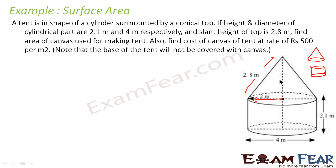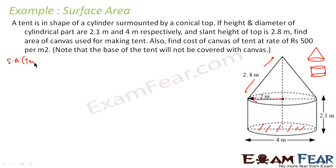We have to find the surface area. We are told the base of the tent will not be covered, so we do not count the bottom circular face. We only need the curved surface area of the cylinder plus the curved surface area of the cone. For the cone, the formula is πrl and we know both r and l. For the cylinder, the formula is 2πrh and we know both r and h.